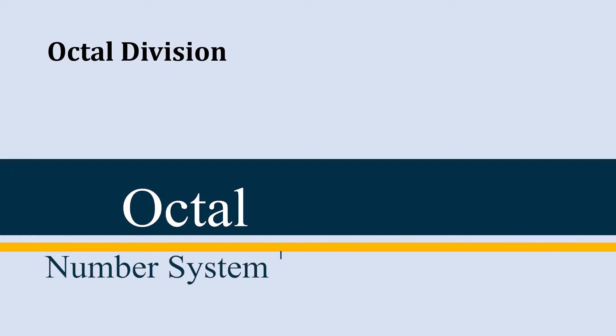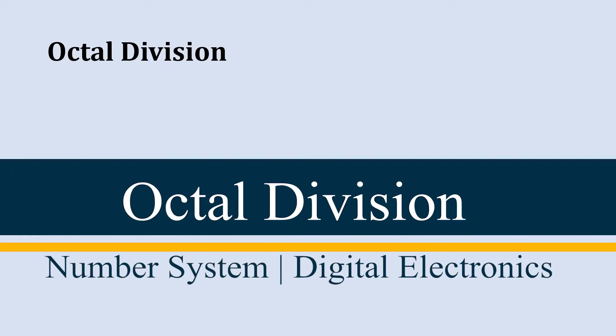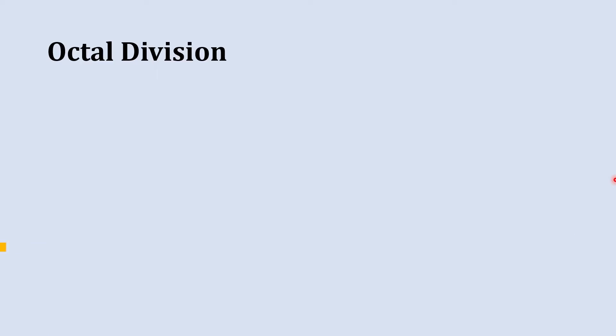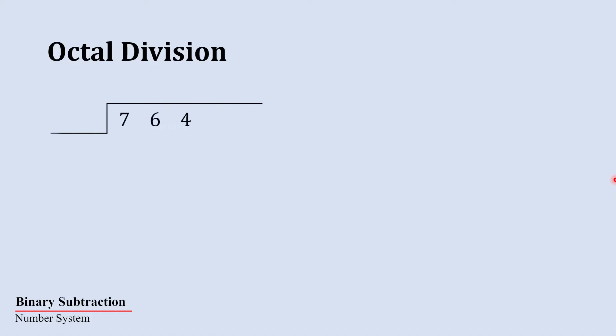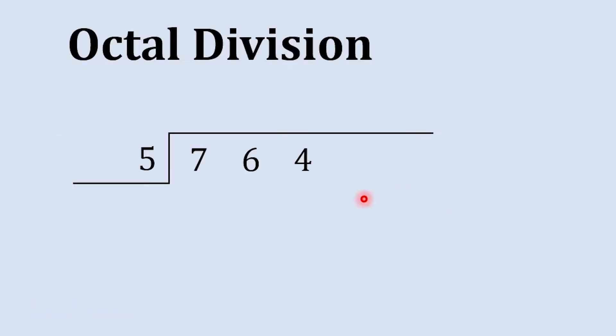Octal division is a little bit tricky, so here we are going to learn how to do octal division easily. Without wasting time, let's get started. Here we are going to divide 764 by 5.